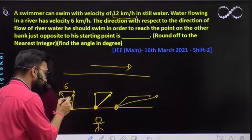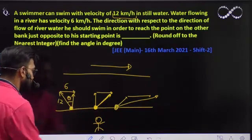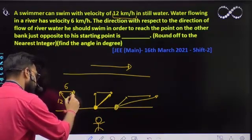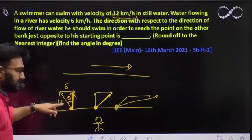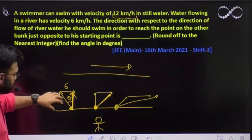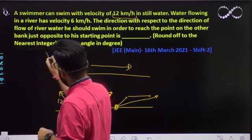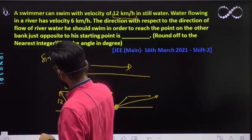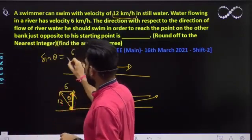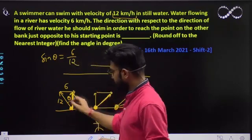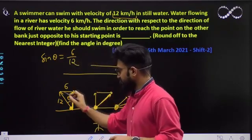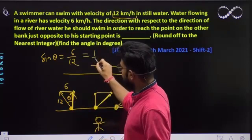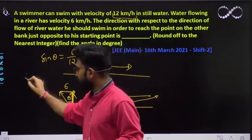So this angle — you can easily find it out. This is a right-angle triangle. So sine theta comes out to be 6 by 12. This particular angle from the triangle: sine theta = 6/12 = 1/2, so theta comes out to be 30 degrees.